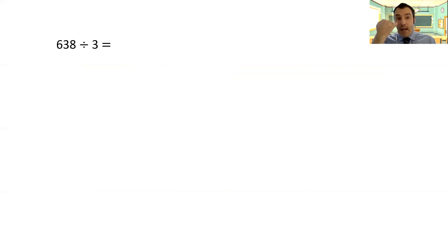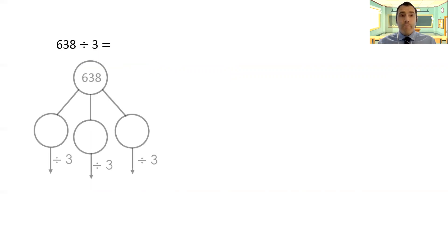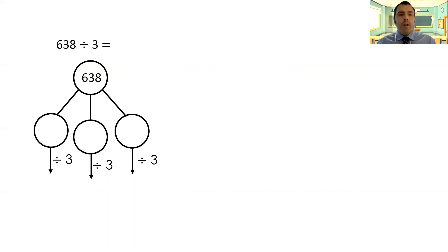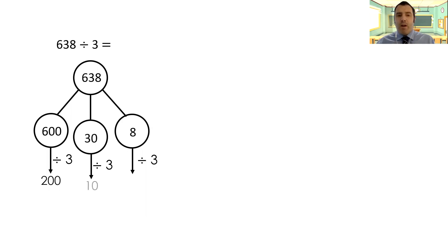So we've got 638 divided by 3. Set up the part-whole model — I'm going to take three parts out of it. I'm going to take 600 first — that's nice and easy. Then 30, because 10 threes are 30. And then I've just got to work out 8 divided by 3: I know there are definitely two threes in there and I've got a remainder — so two remainder 2. My answer is 212 remainder 2.